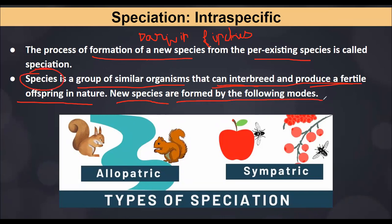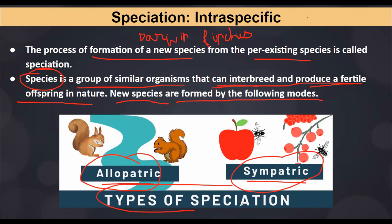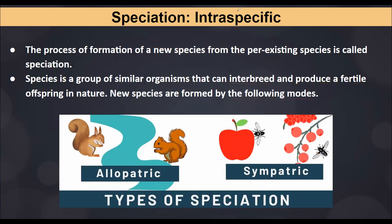New species can be formed by following modes. There are many types, but in your syllabus there are two types under the heading of intraspecific — intra meaning within the population. Those two types are allopatric and sympatric speciation. We've understood that speciation is formation of new species from already existing ones, and the new species can expand its own population by either of these two modes.